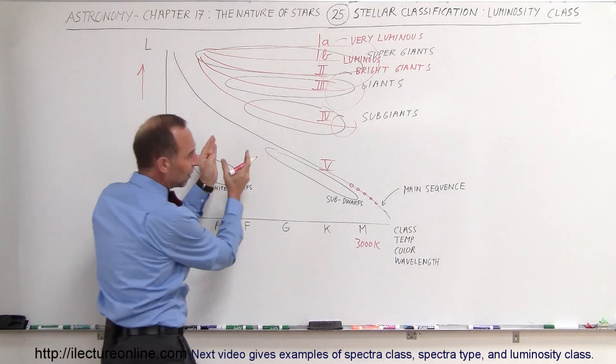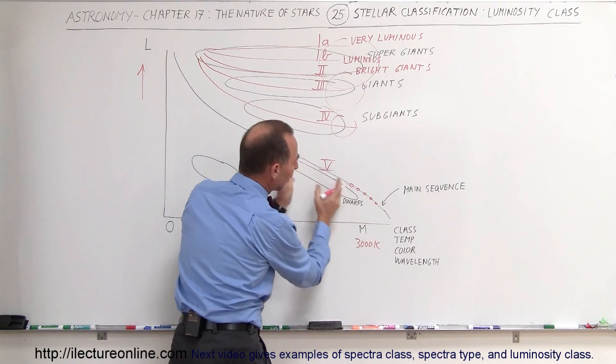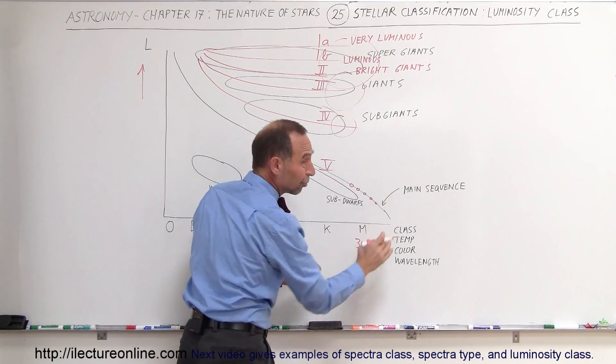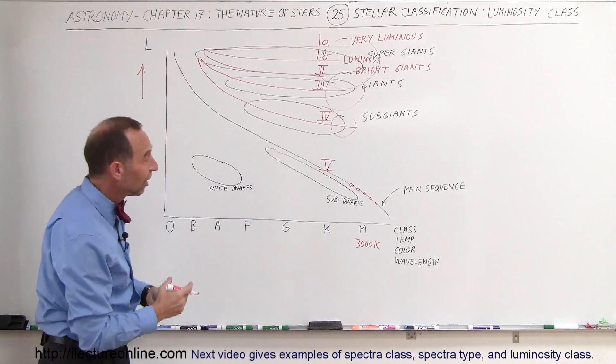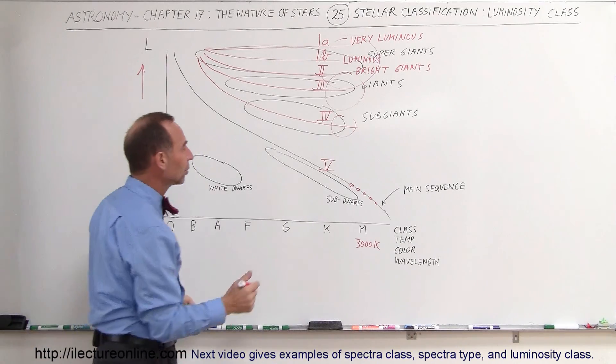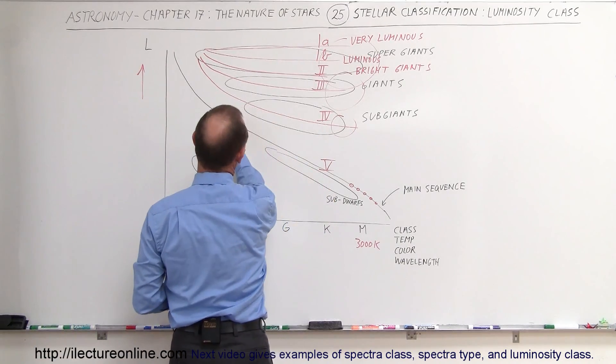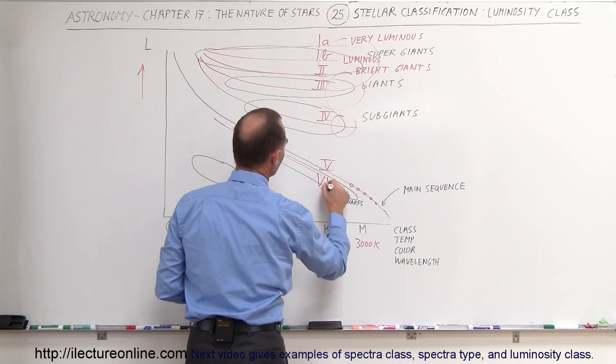Especially in the region of the red dwarfs, if we want to call these red dwarfs because they're small red stars, we have what we call the subdwarf category. And so for that we had luminosity class that was known as luminosity class VI.